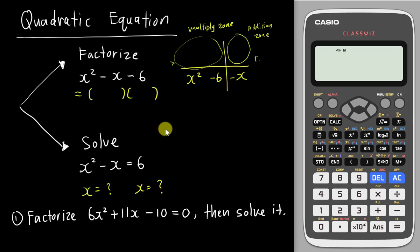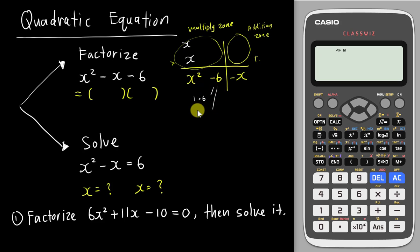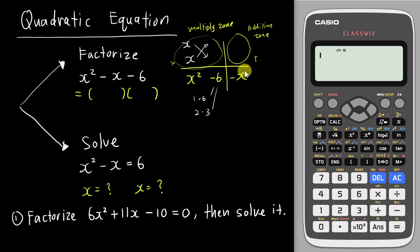So you need to multiply some numbers here in order to get x squared and minus 6. This other side I call the addition zone, so you add them together. To get x squared, it's basically x multiply x. If I want to get 6, I have two choices: one multiply six, or two multiply three. After cross-multiplying, the difference must equal 1x only.